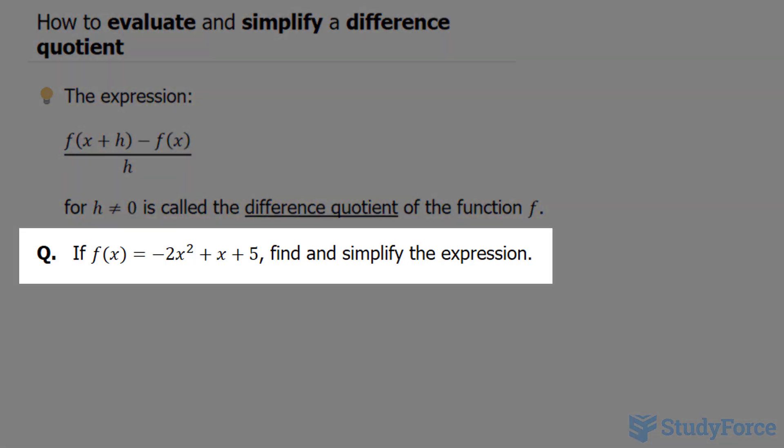Our function is minus 2x squared plus x plus 5, and we're expected to find and simplify the expression.